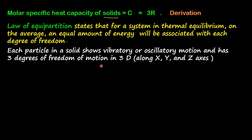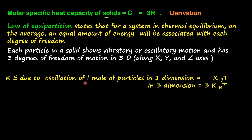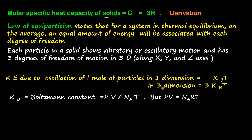The energy of the particle is due to these three degrees of freedom of motion. Kinetic energy due to oscillation of one mole of particles in one dimension is KB times T, where KB is the Boltzmann constant. For three dimensions, the total kinetic energy equals 3KB·T. KB equals PV divided by Avogadro number NA, multiplied by 1 by T.